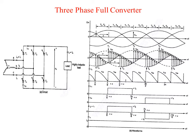At omega t equal to pi by 2 plus alpha, as shown in Figure B, thyristor T2 is fired and thyristor T6 is reverse biased immediately. Thyristor T6 is turned off due to natural commutation. During the interval omega t greater than or equal to pi by 2 plus alpha and less than or equal to 7 pi by 6 plus alpha, thyristors T1 and T2 conduct and line-to-line voltage VAC appears across the load.